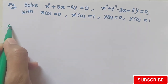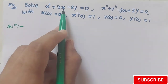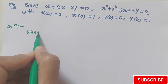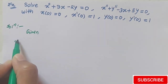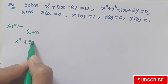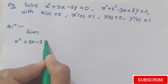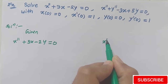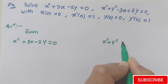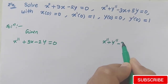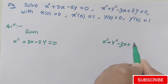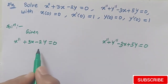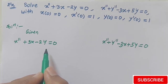Now we start how to solve this example. We have been given two equations. The first equation is x double dash plus 3x minus 2y equals to 0, and our second equation is x double dash plus y double dash minus 3x plus 5y equals to 0.